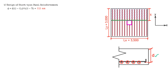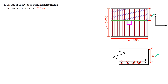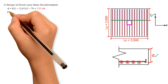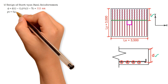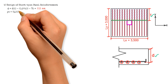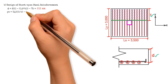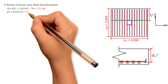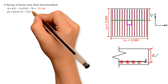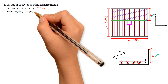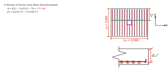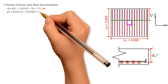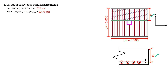Then we will calculate for Y sub C, which equals length LY 3000 mm divided by 2, minus 0.5 times CY 450 mm, and that gives us 1275 mm.